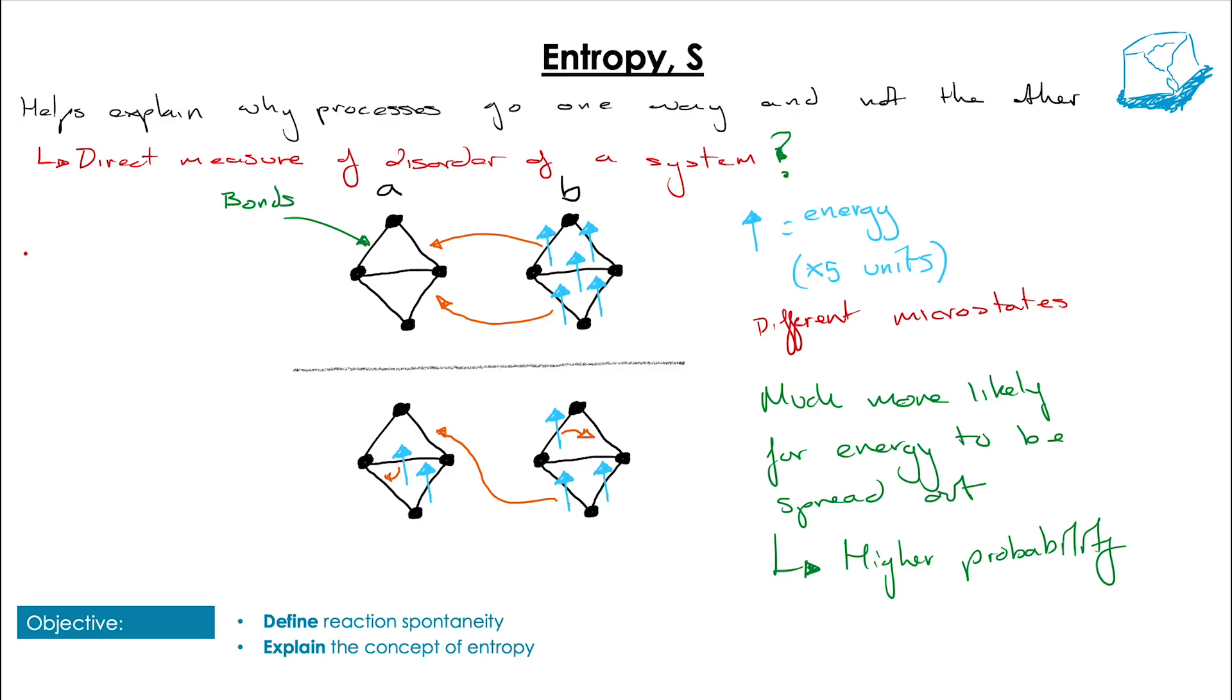Now this is a very simple example however it shows how entropy can be considered a measure of the spread of energy. Low entropy is where all of the energy is concentrated in one place and high entropy is where the energy is distributed.